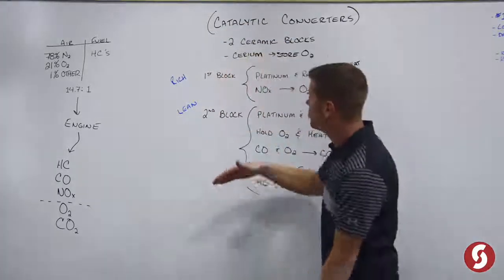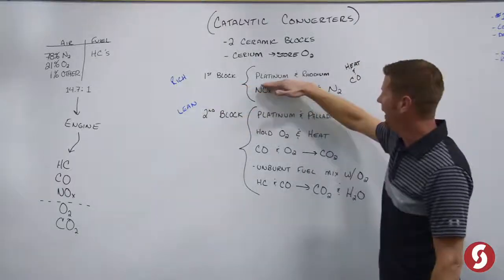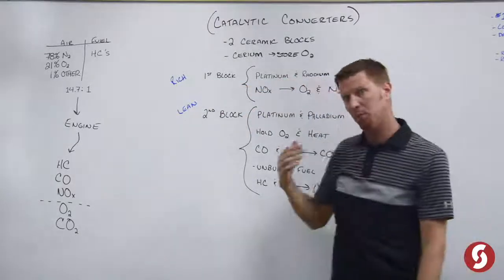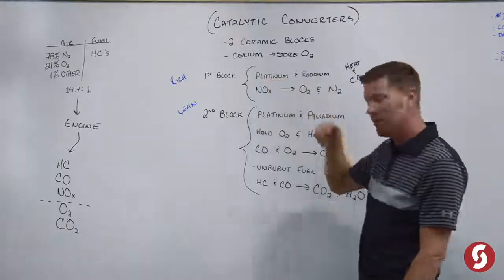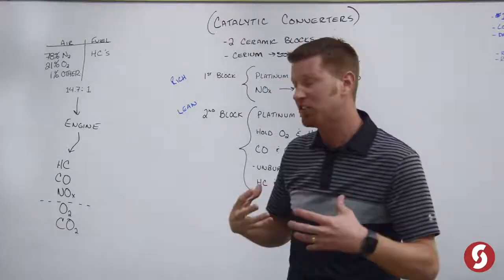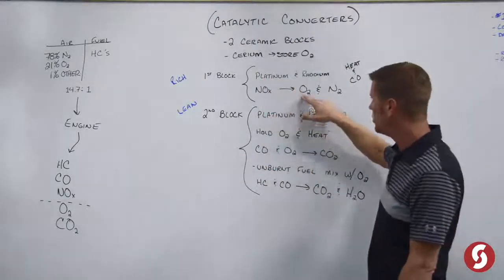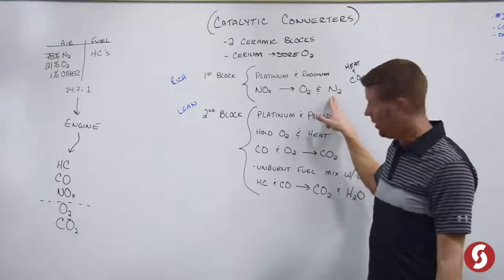Now as far as the two blocks, the first block we have platinum and rhodium, and the purpose of that is when the oxides of nitrogen hit the platinum and the rhodium, that's our catalyst, it's actually going to separate the oxides of nitrogen into oxygen and nitrogen.